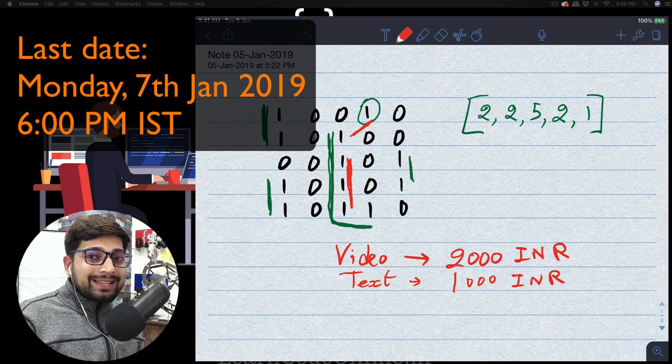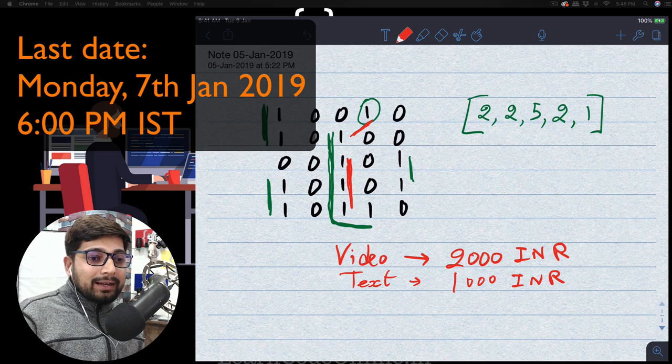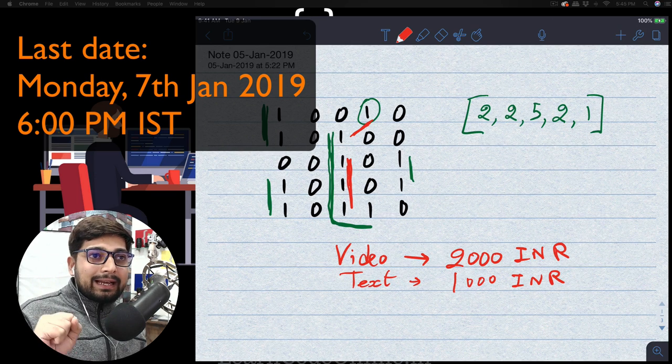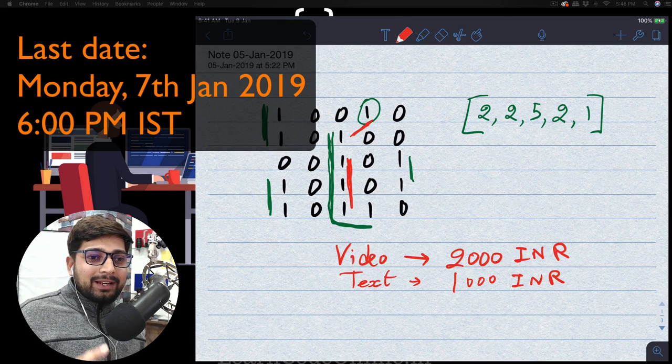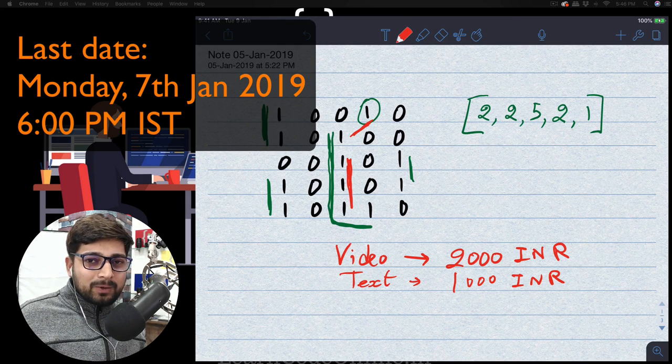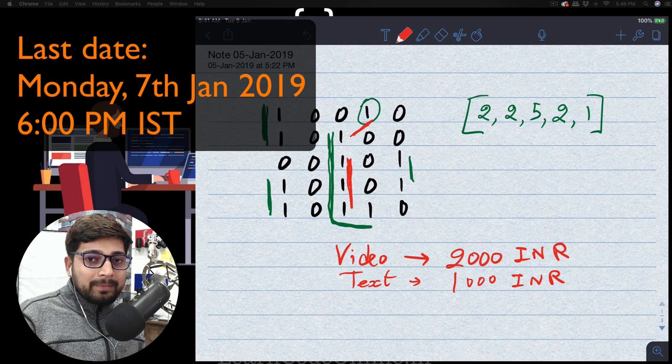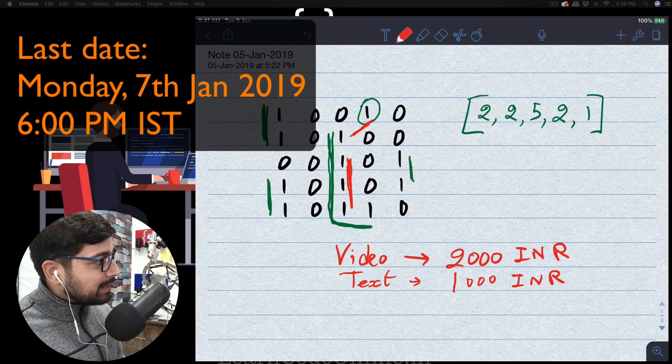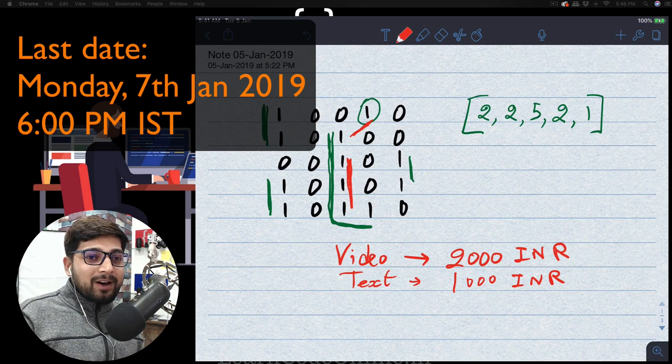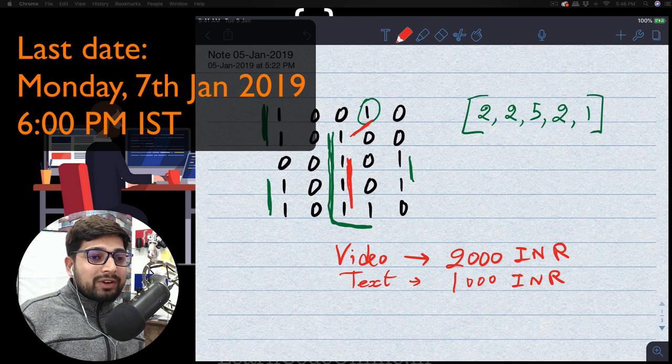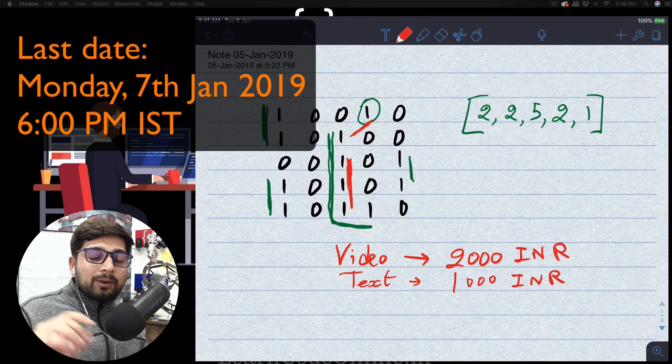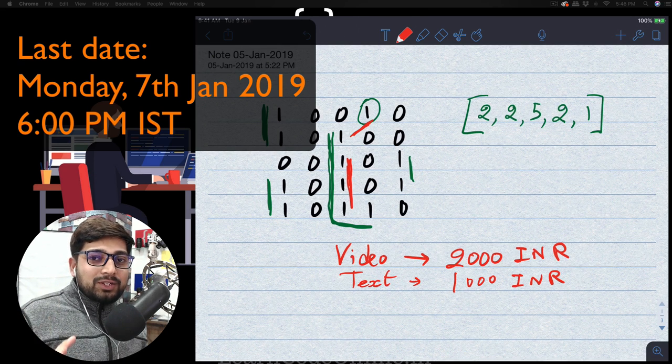The Google form is going to accept the solution till Monday, let's just say 6 p.m. according to Indian time. I know you don't have much time, but I think that's more than enough for this one small problem. Monday, 6 p.m. So today is 5th of January, so 7th of January by 6 p.m. you have to submit the solution. I would recommend you to try the video-based solution. That is going to be awesome.